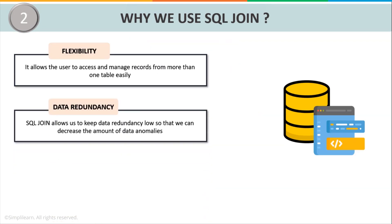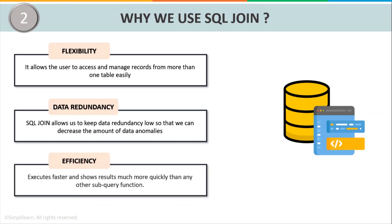Data redundancy. SQL Join allows the user to maintain data redundancy as low as possible, so that we can minimize data anomalies — that is, duplicate values repeated across various tables in the database. Finally, efficiency. SQL Join executes queries faster and shows results more quickly because instead of using various subqueries for each table individually, we can simply join two tables using a single query.